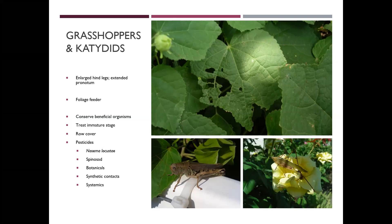Botanicals for grasshoppers and katydids are mainly going to be azadirachtin or the pyrethrum/pyrethrins products. Those are broad-spectrum products that will kill whatever insect comes into contact with them. And then of course we have synthetic contacts and systemics, which are also pretty broad spectrum on these.